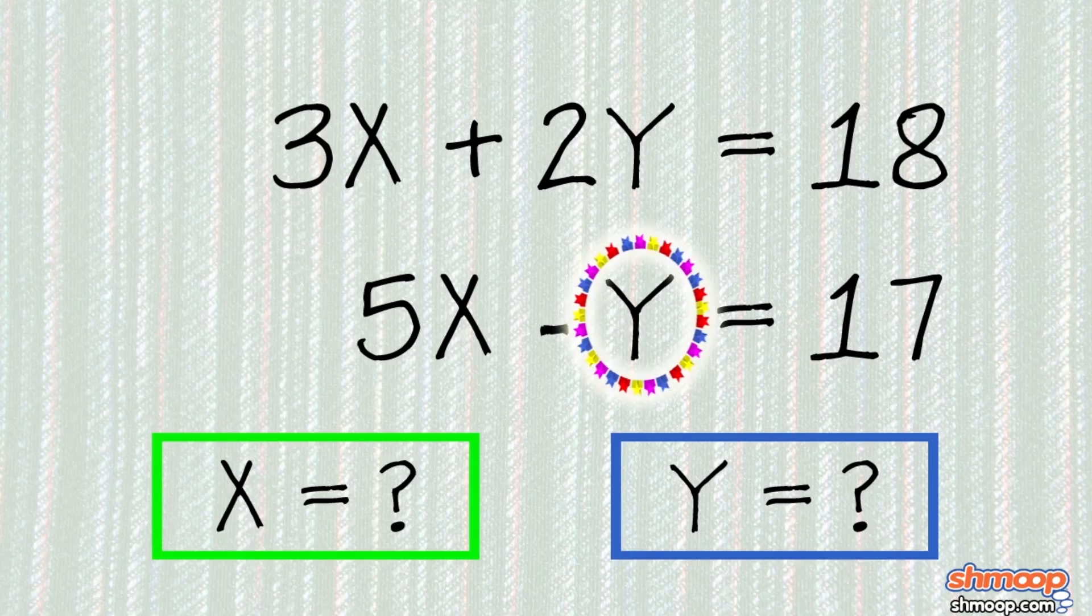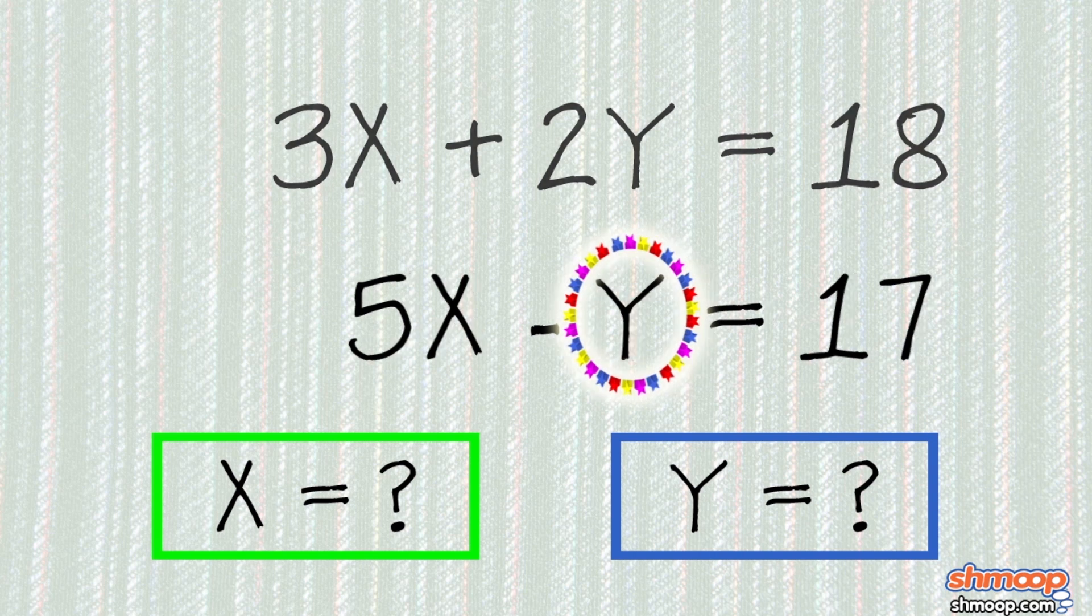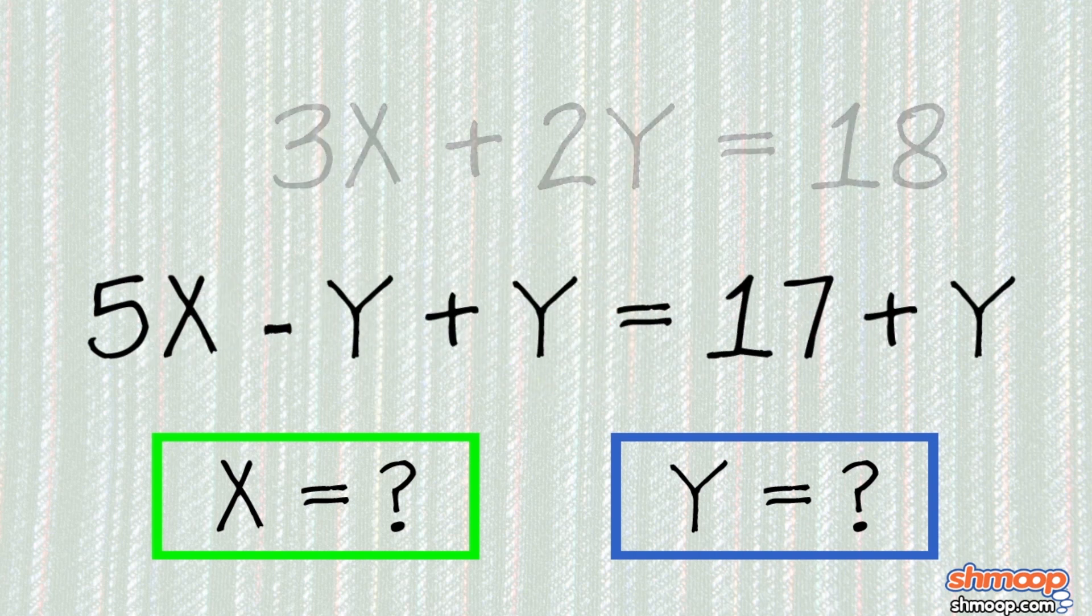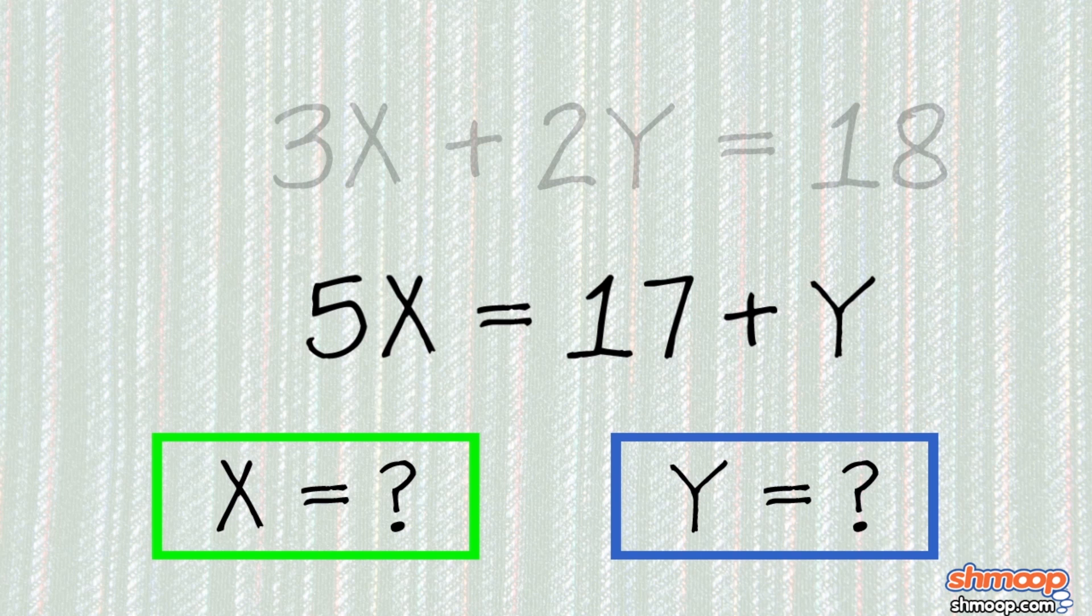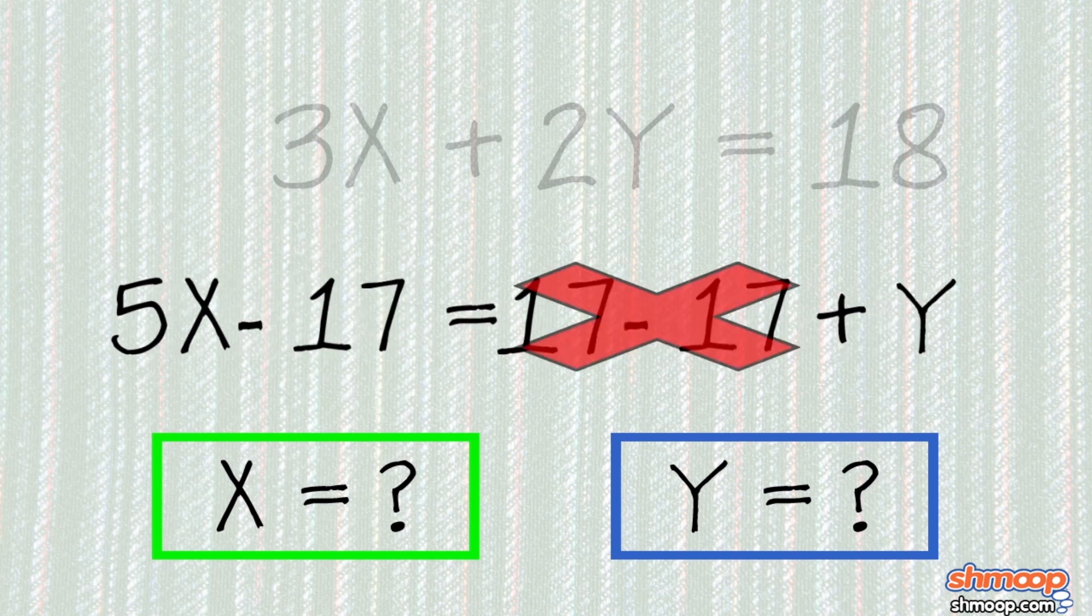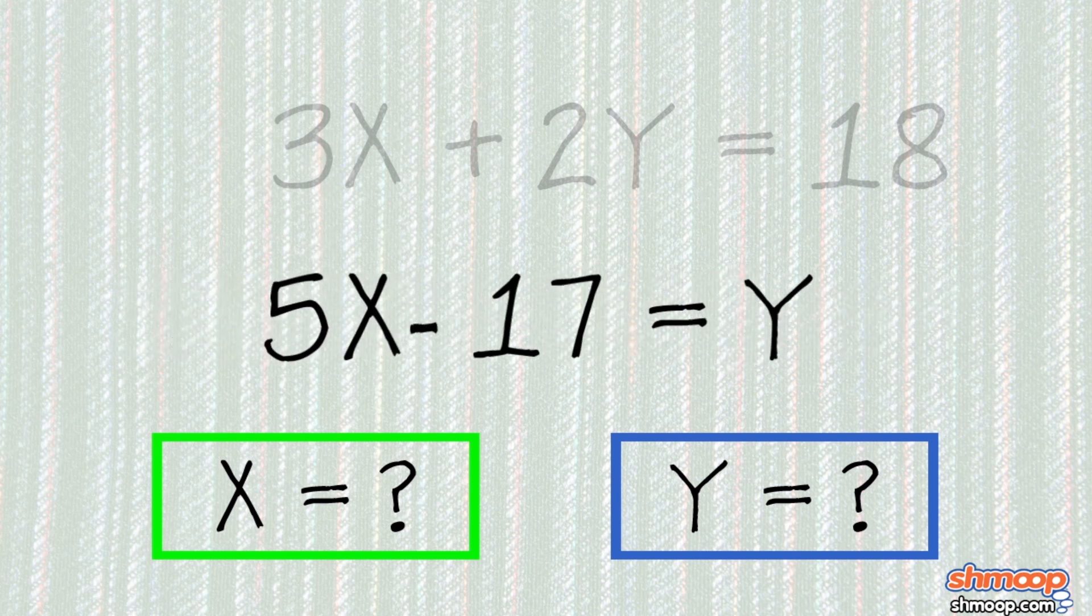Here, the y term in the second equation is already by itself, so let's start there. We can add y to both sides to get 5x equals 17 plus y. Then subtract 17 from both sides to get 5x minus 17 equals y.